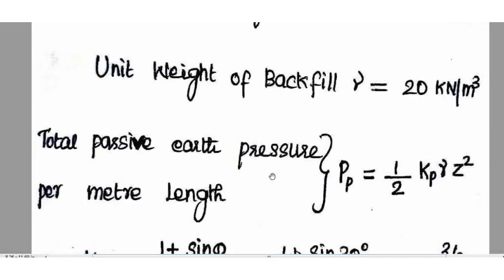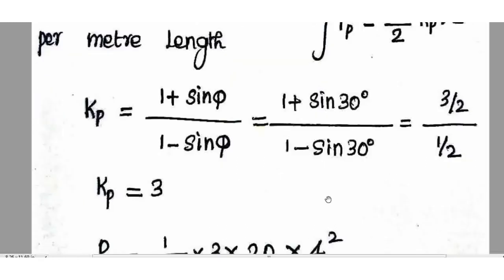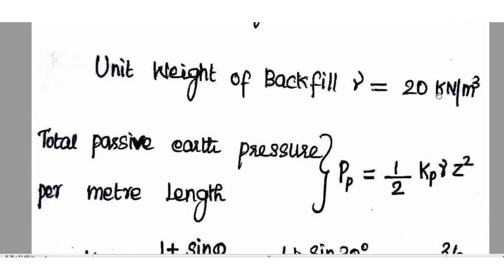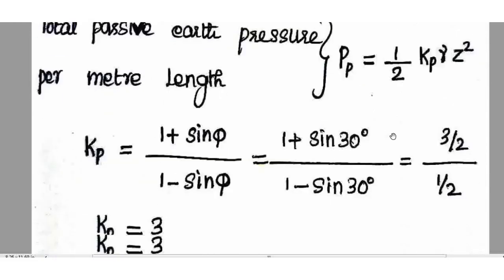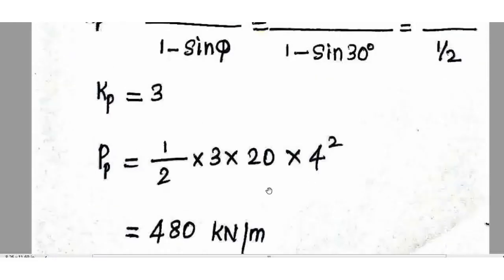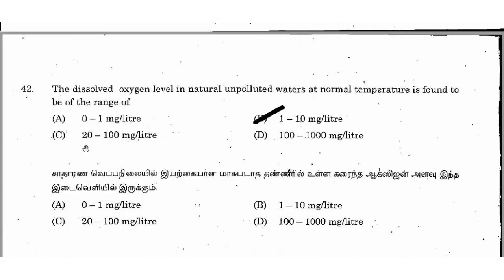Total passive earth pressure per meter length of wall: PP = ½ × Kp × γ × H². The coefficient of passive earth pressure Kp = (1 + sin φ)/(1 − sin φ). For φ = 30°: Kp = (1 + 0.5)/(1 − 0.5) = 3. With γ = 20 kN/m³ and wall height H = 4m: PP = ½ × 3 × 20 × 16 = 480 kN/m. The right answer is 480 kN/m.